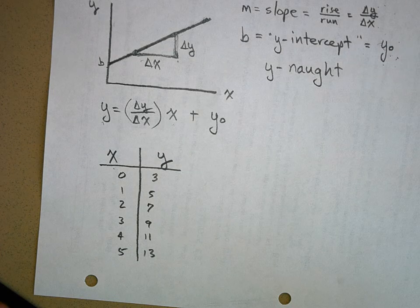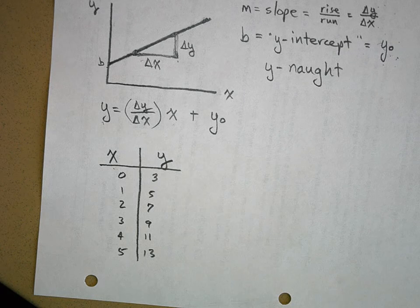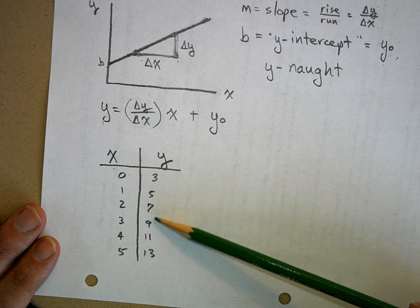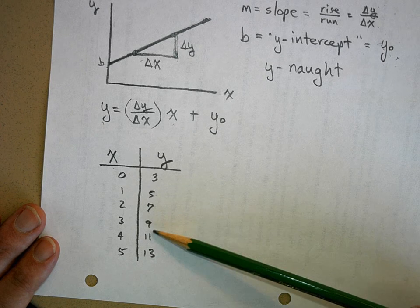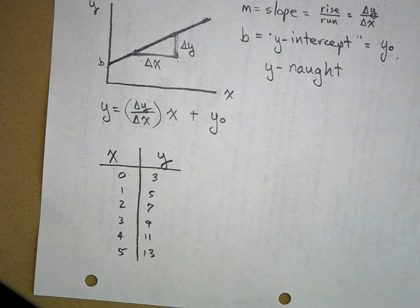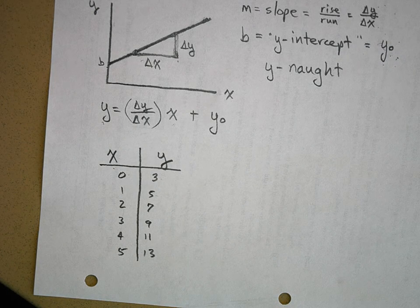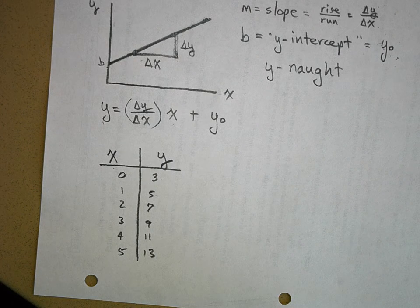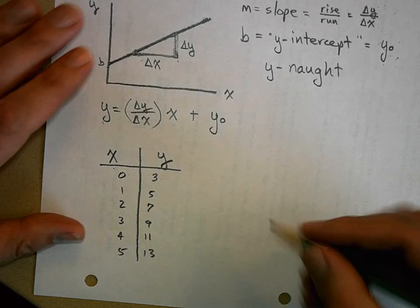Now what we want to ask is: is there a relationship between X and Y? Is there a pattern here? Looking at the data, X is getting greater and greater, and Y increases by the same amount each time — it seems to start at 3 and increase by 2. We can get a lot of meaning just from looking at the data, but sometimes the data are not quite as clear. So another way of extracting meaning is to graph the data.